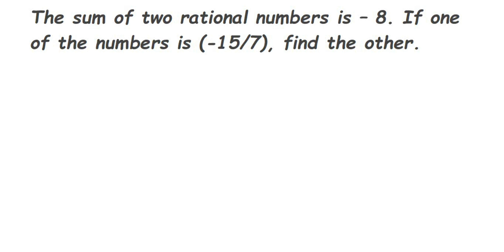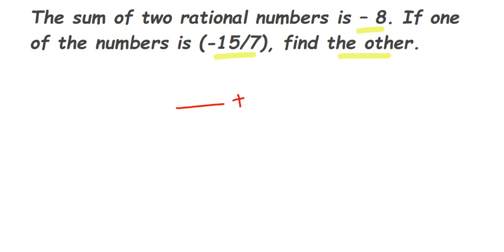Hi everyone. Here we have a question from rational numbers. The question is: the sum of two rational numbers is -8. They have given the sum of two numbers is -8, and we are given one number. We are adding two rational numbers and the answer is -8.